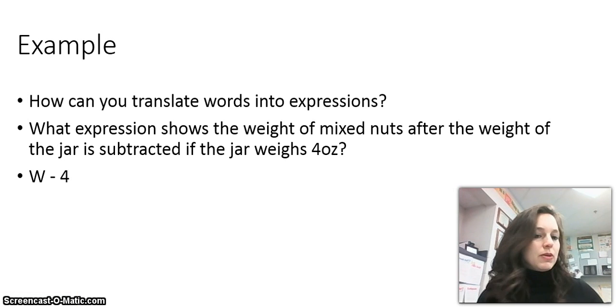First, expression, which means that we need to write a number sentence, but we don't have to find the answer and we don't have to show an equal sign. So we have the weight, we're going to call that W. W of mixed nuts after the weight of the jar is subtracted if the jar weighs 4 ounces. So because we have the word subtracted, we know that we need to minus, so we have the subtraction symbol here. And then we have our one value, which is 4 ounces, so we'll go W minus 4.